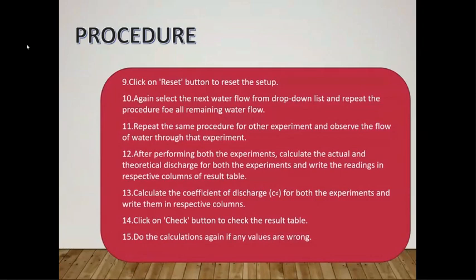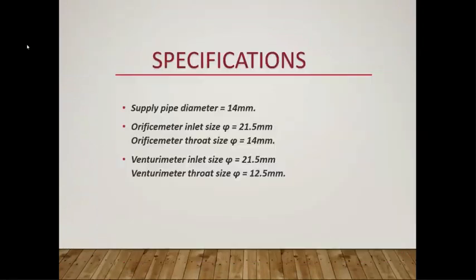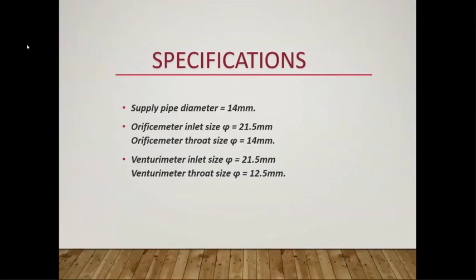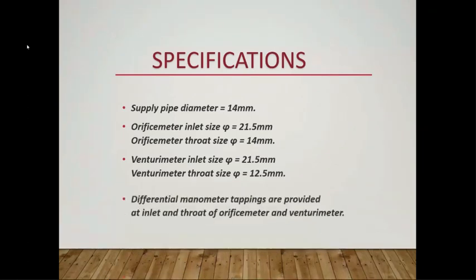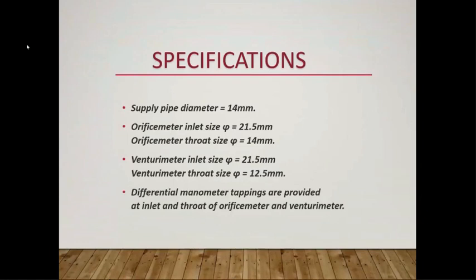The supply pipe diameter is 14 mm. The orifice meter inlet size is 21.5 mm and throat size is 14 mm. The venturi meter inlet size is 21.5 mm and throat size is 12.5 mm. Differential manometer tappings are provided at the inlet and throat of both the orifice meter and venturi meter.